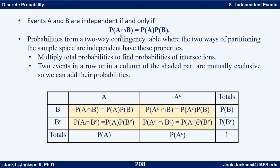It turns out that we have this basic property: the probability of A intersect B is the probability of A times the probability of B, if and only if they're independent. So we always have in a table like this that the row sums equal the total probability at the end, and the column sums of the probabilities at the bottom always give us one. What goes in each cell is the probability of A intersect B, and we can find that by multiplying: probability of A times probability of B.